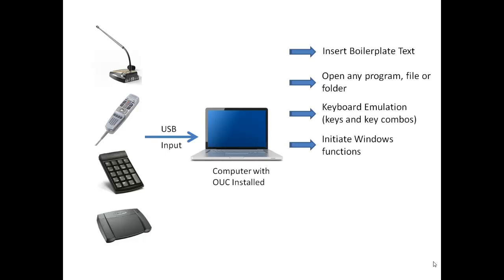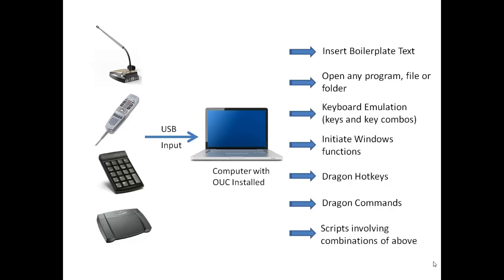OUC can also perform any of a variety of Windows functions, such as opening the Task Manager, Control Panel, or Devices and Printers area; initiate any Dragon NaturallySpeaking hotkey functions; initiate any Dragon commands, including commands you have created; and when the need arises, combine any of these functions into a multi-sequence script in which a series of actions occur one after another — all upon the push of a button.